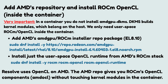Add AMD's repository and install ROCm OpenCL inside the container. In a container you do not install AMD GPU DKMS — DKMS builds kernel modules, which belong on the host. We only need userspace ROCm OpenCL inside the container. First, add AMD's amdgpu ROCm installer repo package by running the following command. Then install just the userspace ROCm OpenCL runtime from AMD's ROCm stack. Resolve uses ROCm on AMD, and the AMD repo gives you ROCm's OpenCL components without touching kernel modules in the container.